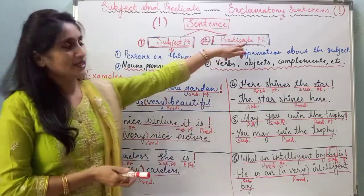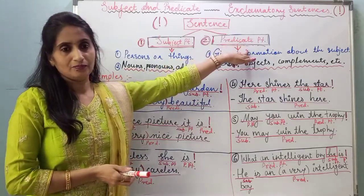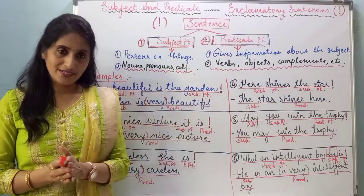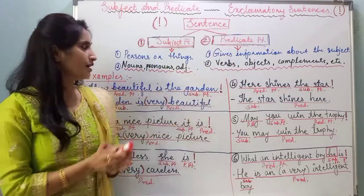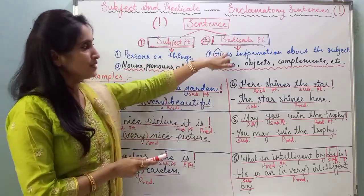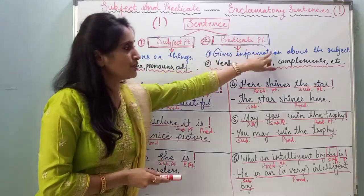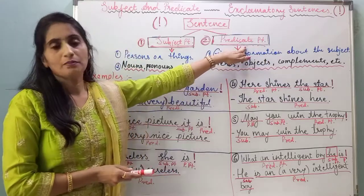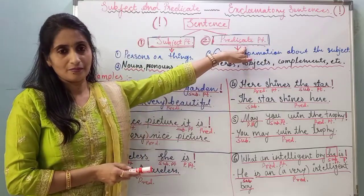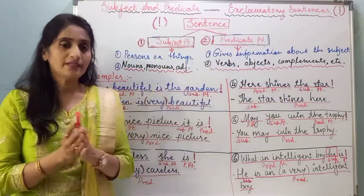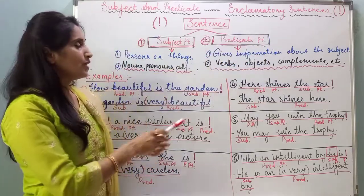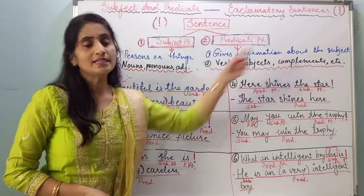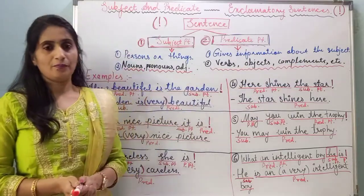What is the predicate part? The part of the sentence which gives information about the subject is called the predicate part. In this part we have words, objects, complements, etc.